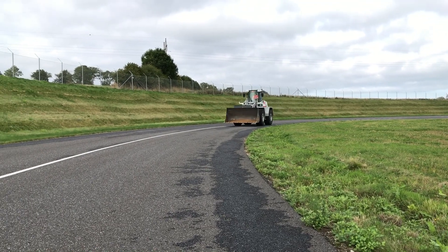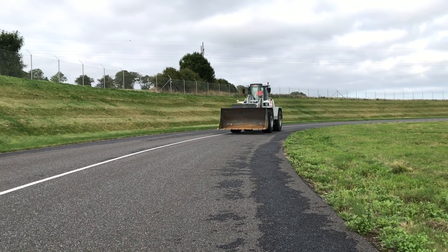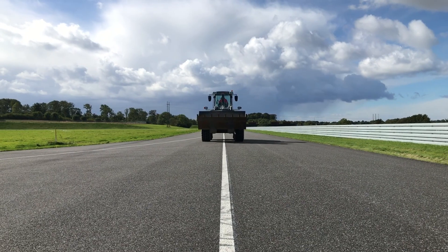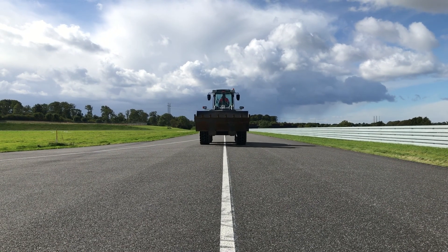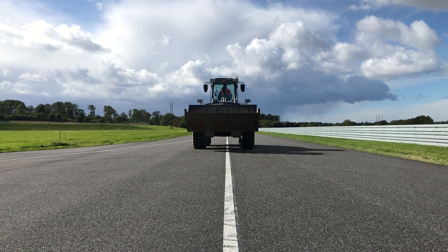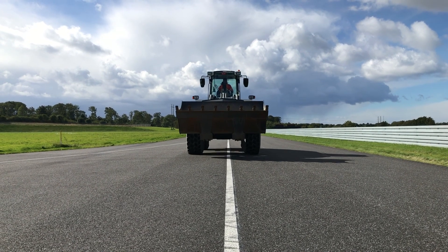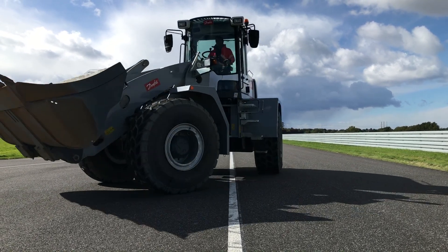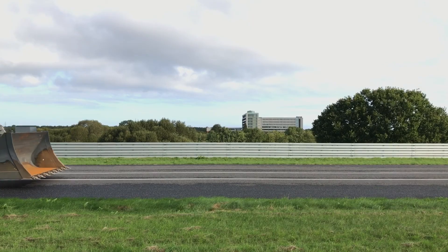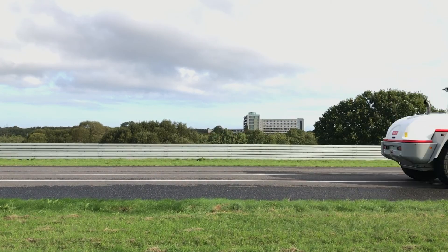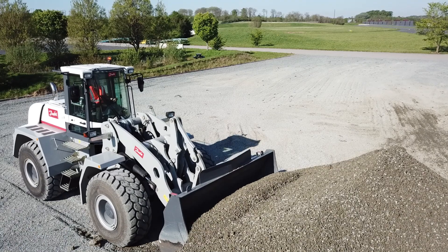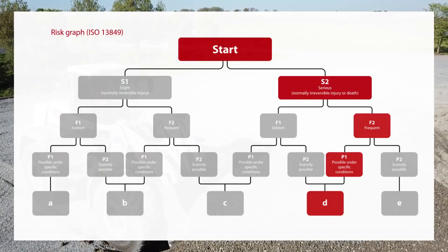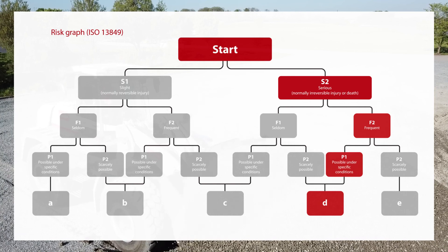For this scenario we consider a hazard where a sudden failure in the joystick steering system could unintentionally command the hydraulic proportional valve to full stroke. The result would be a sudden change of the driving direction potentially leading to an accident. This hazard could be evaluated by applying the risk graph from ISO 13849. We begin at start.